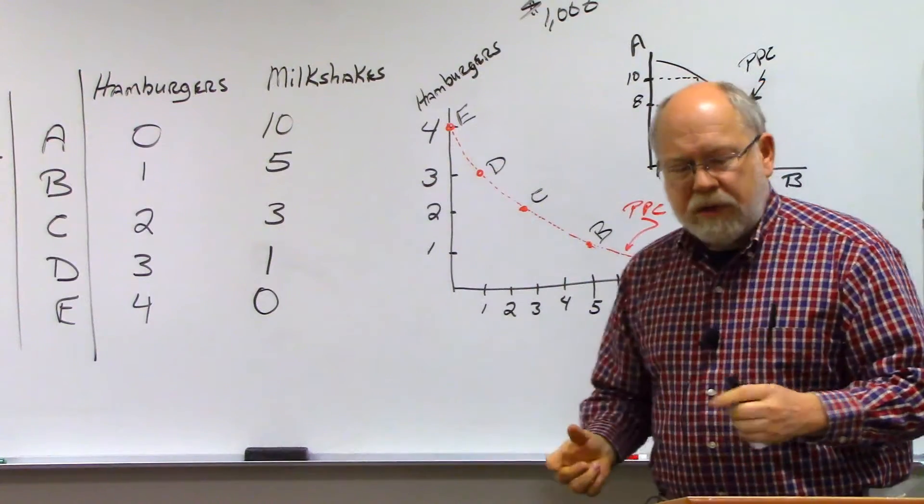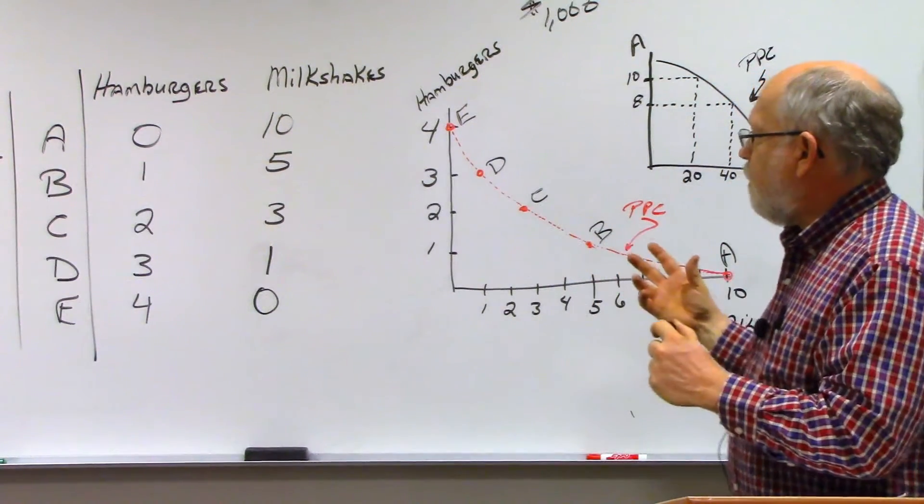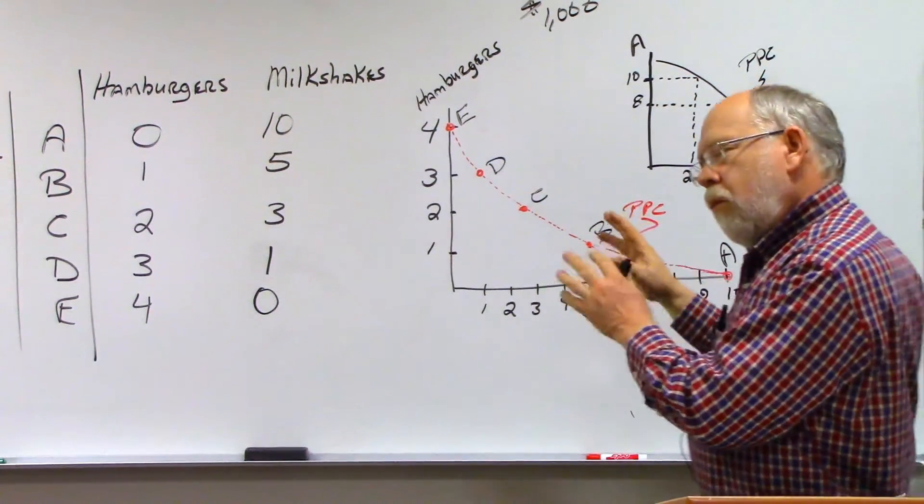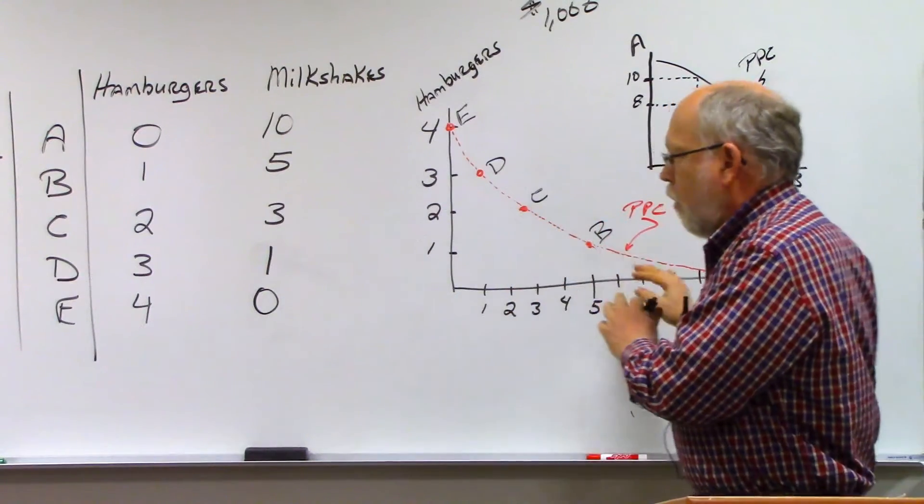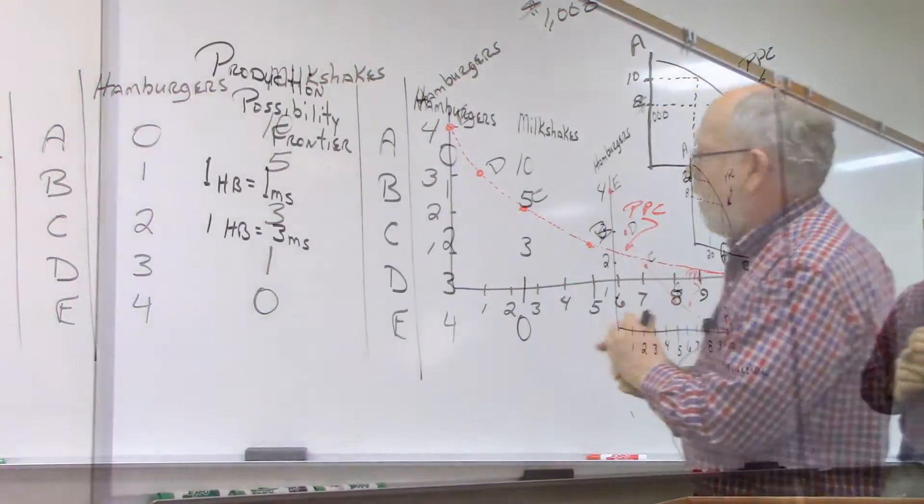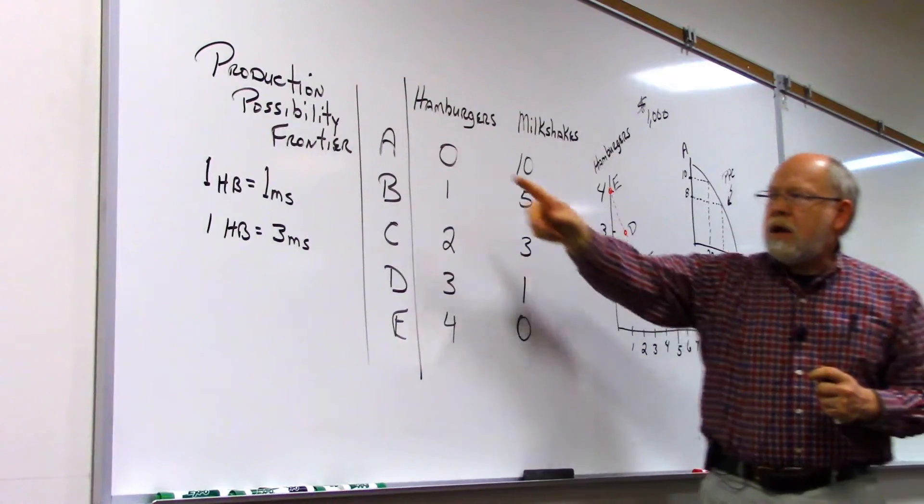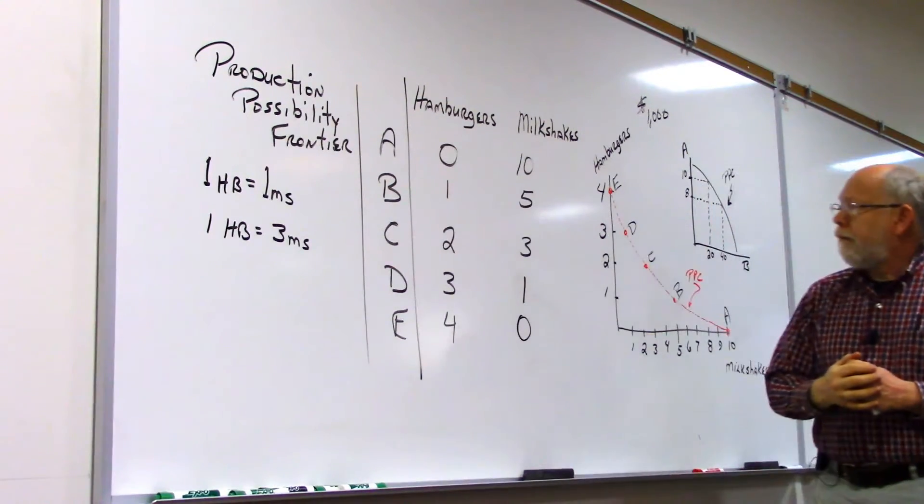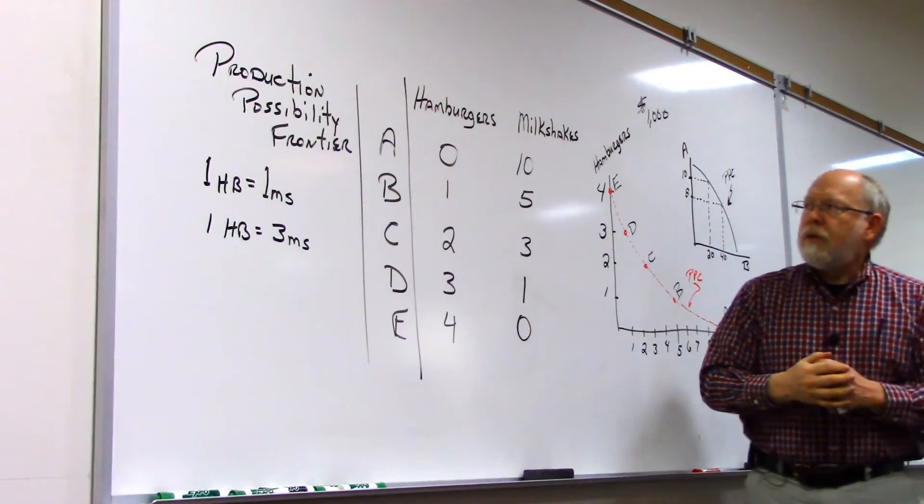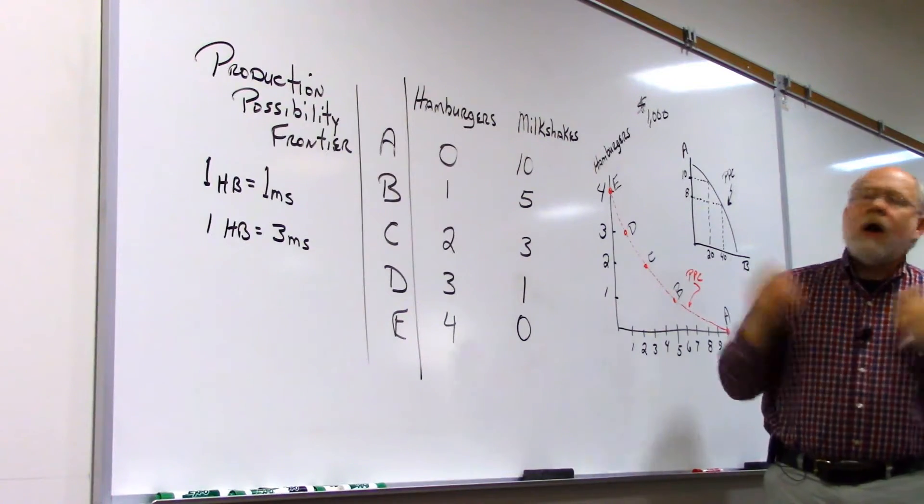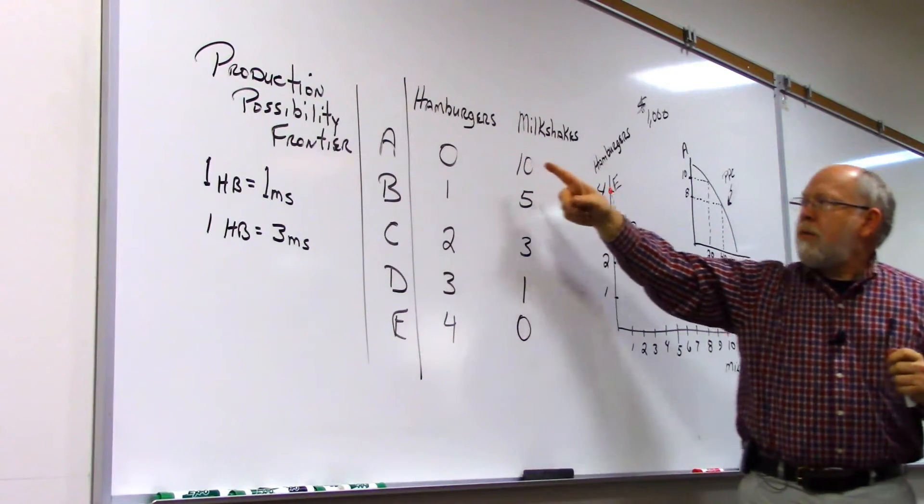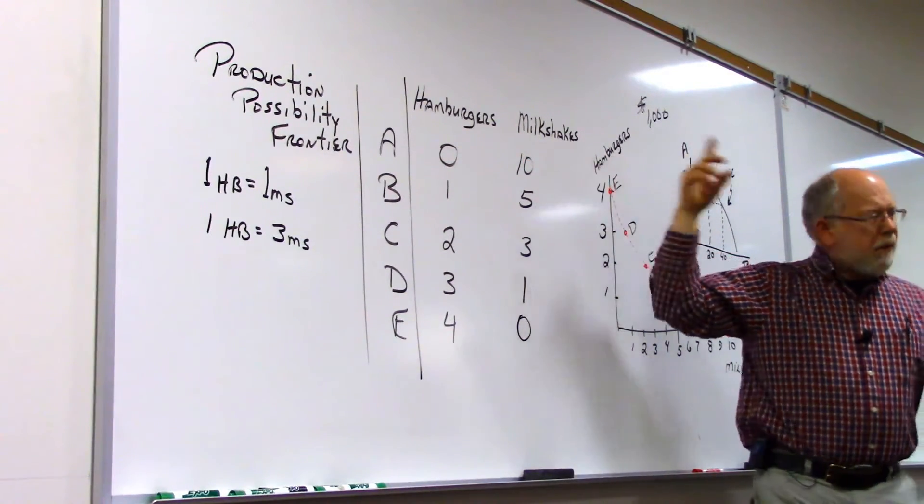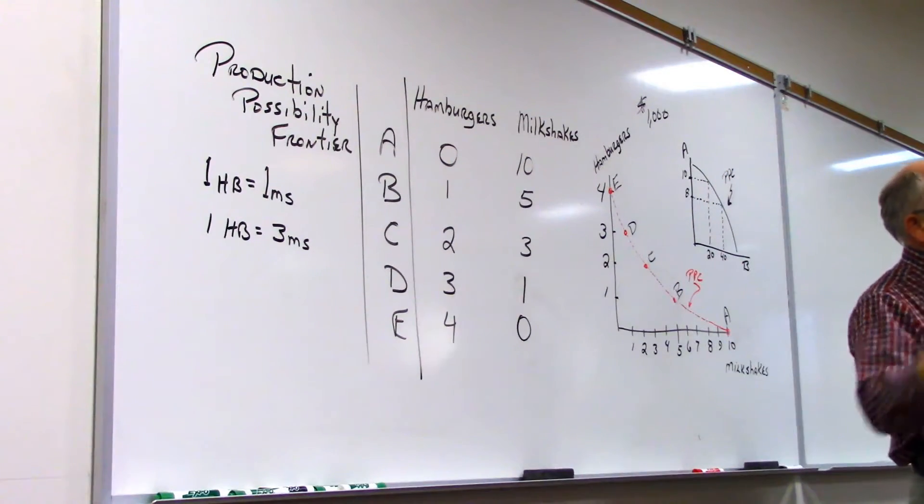Now, if we're looking at that, we're saying, okay, now that we've got some price involved here, we can see where we want to be on the curve. But before we go there, if we are here at point A, and we want to produce a hamburger, at point A we're producing all milkshakes, but for some reason we decide we want to produce a hamburger.